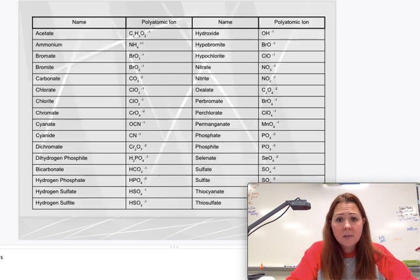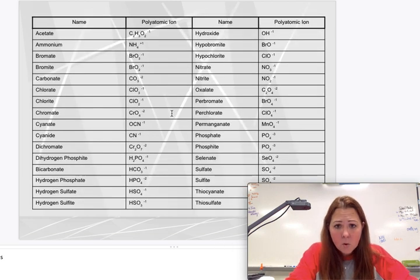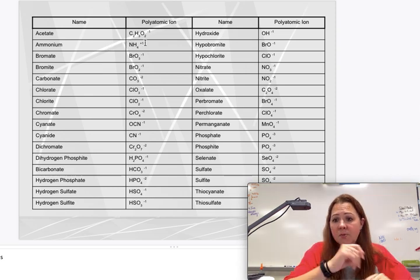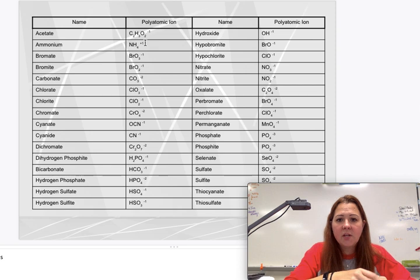So the list looks like this, where you have the formula like acetate, C2H3O2 with a negative one charge. Ammonium right here, this is the only one that has a positive charge. That's the only one you'll ever see written first. So if you have NH4 with a plus one, you'll see it in the first spot. You'll find out why on the next video, why it's written first.